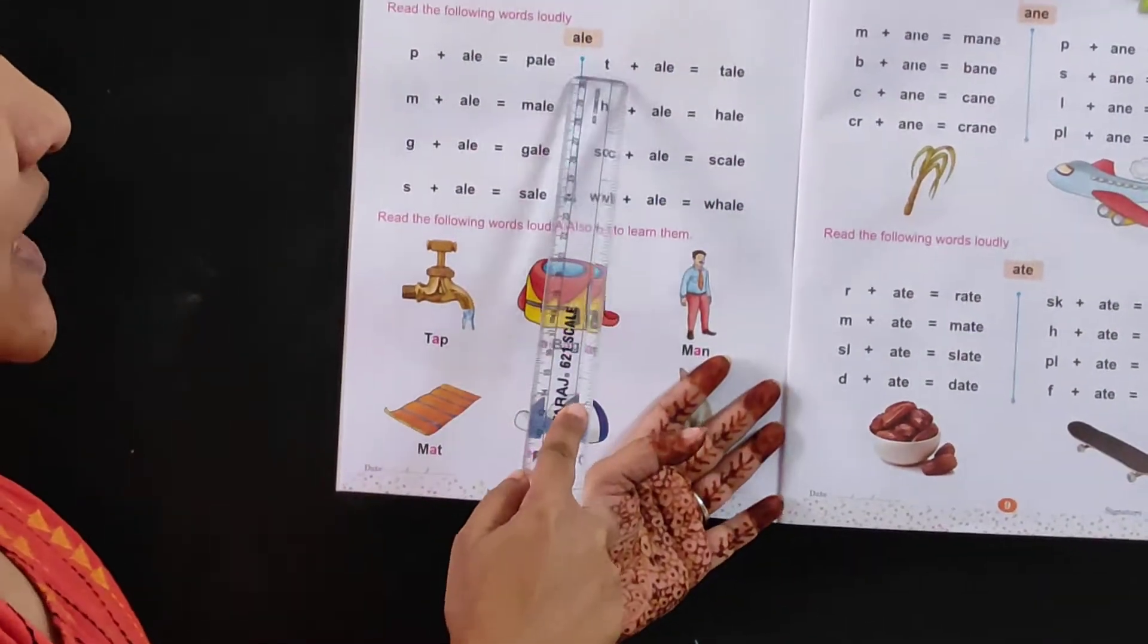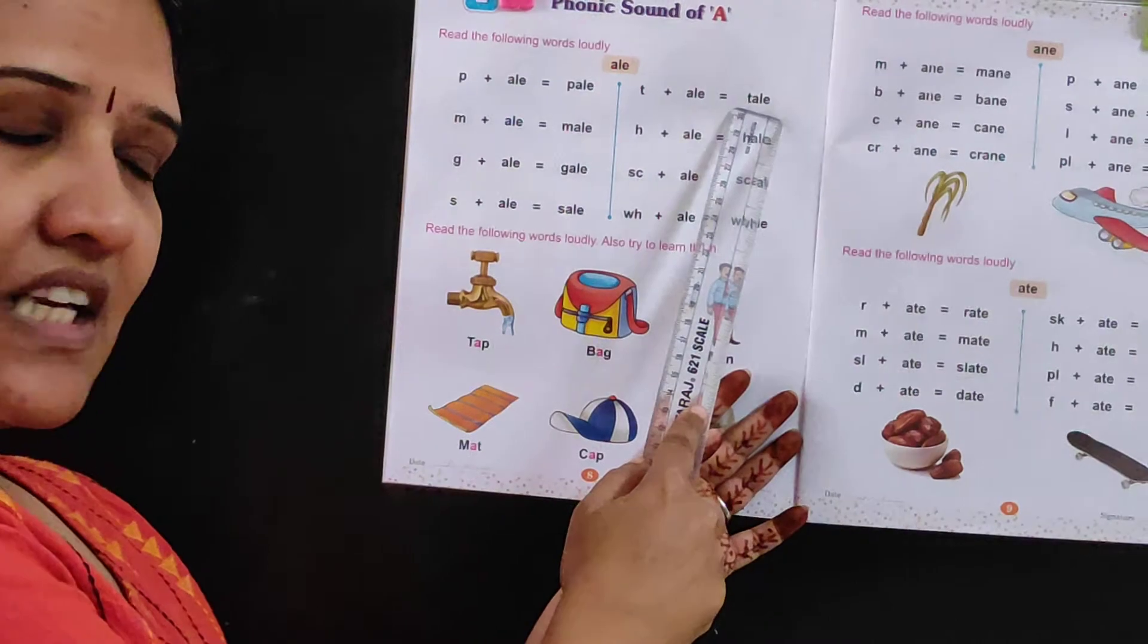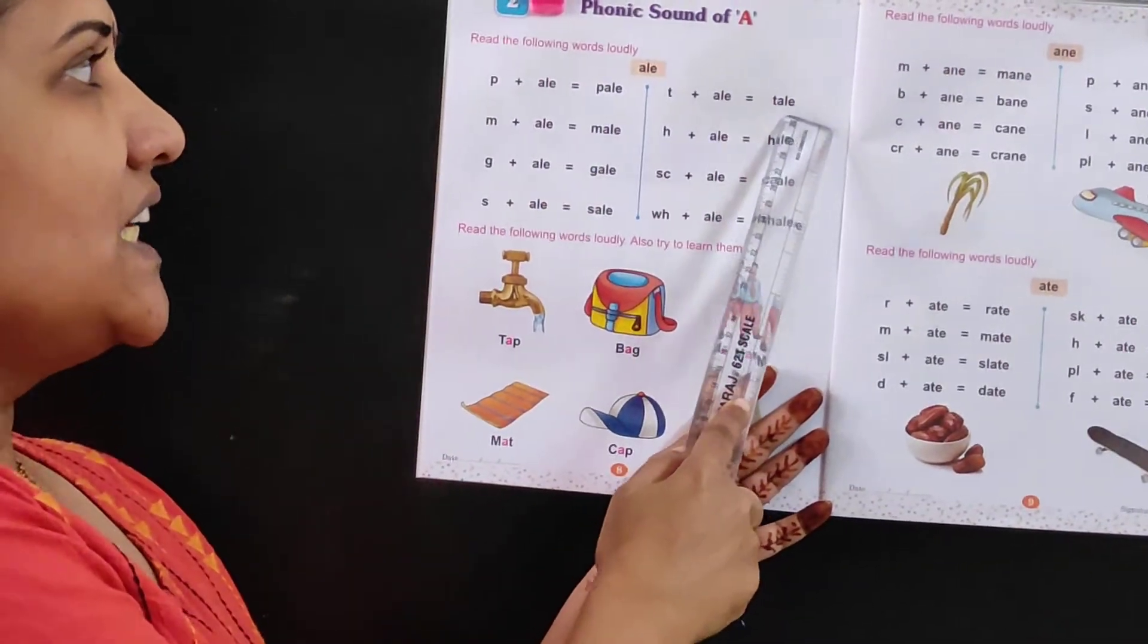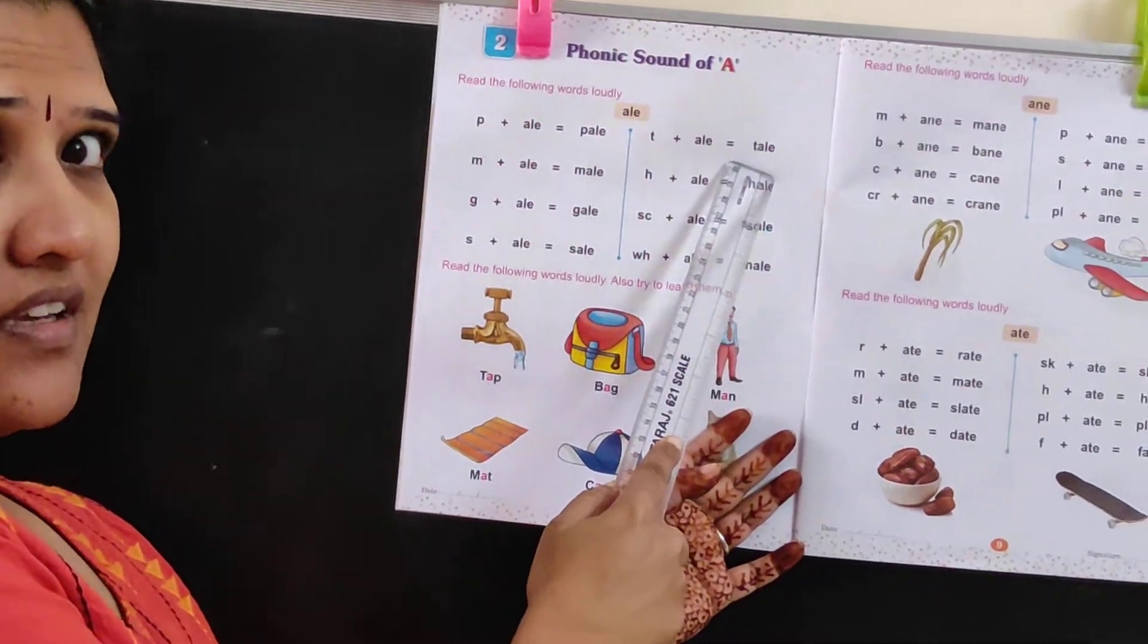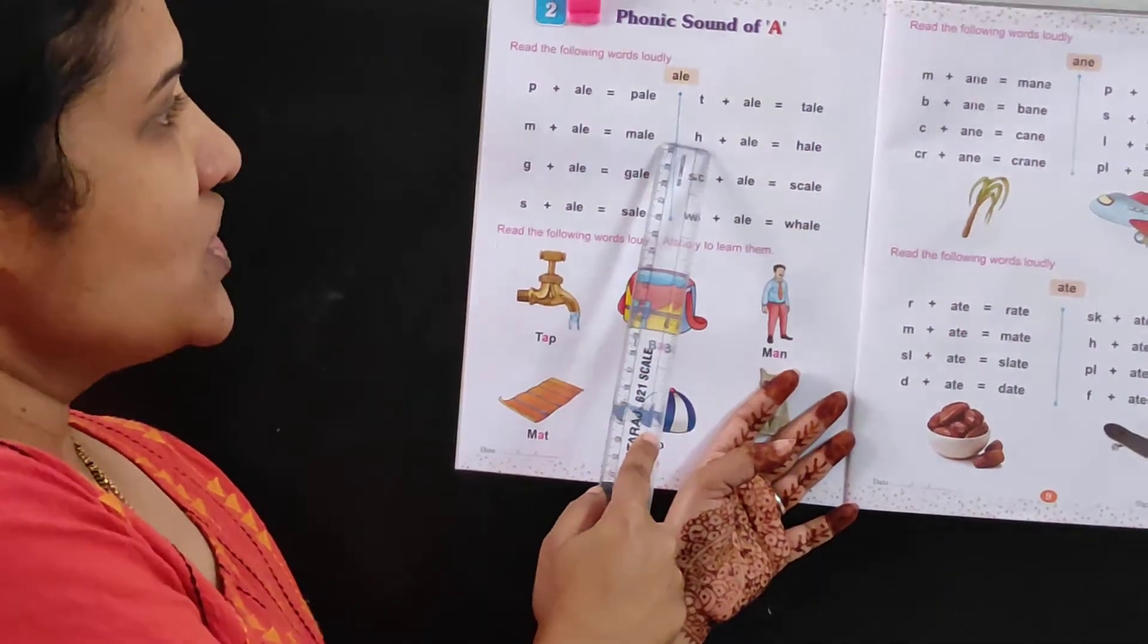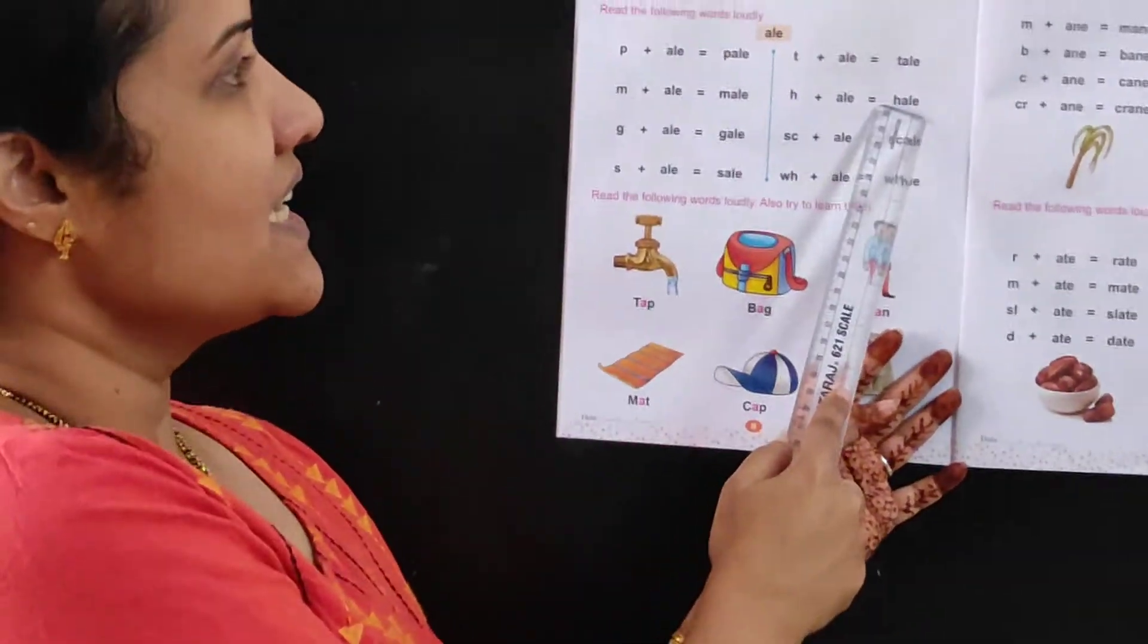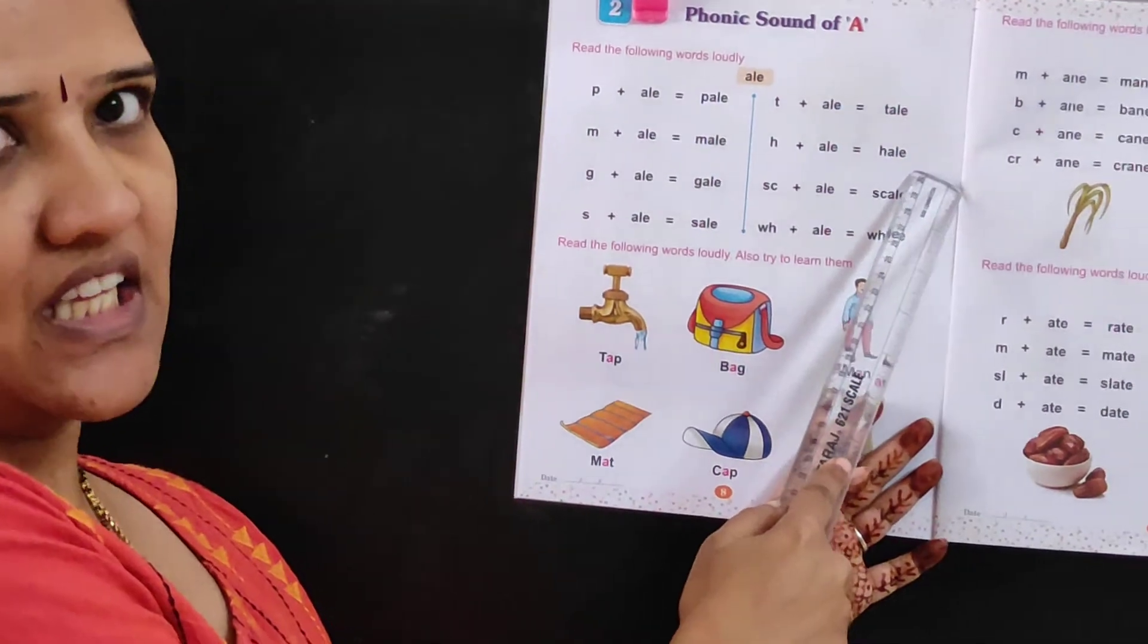Then T plus A is tale, T-A-L-E, tale. This tale means story. H plus A is hale, H-A-L-E, hale.